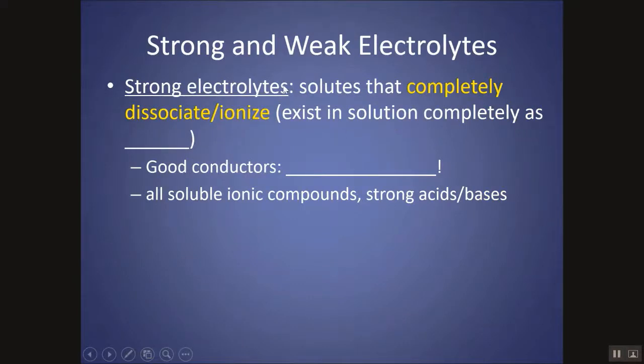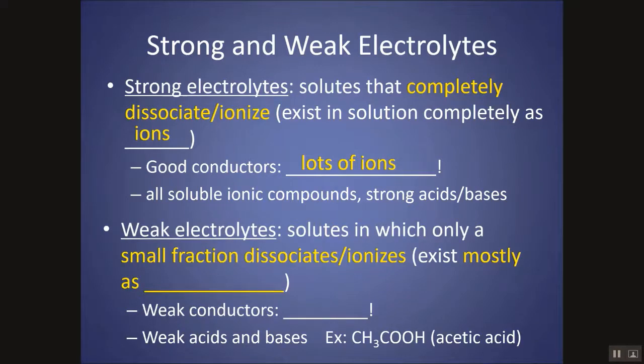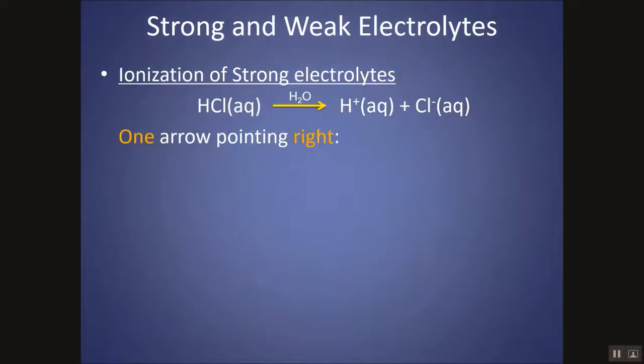Electrolytes can be strong or weak. Strong electrolytes 100% ionized. All of them are present fully as ions, so they are very good conductors. If it does not 100% ionize, then it would be a weak electrolyte. And weak electrolytes usually a lot less than 100% ionizes. A small fraction only ionizes and most of it is present in the molecule form. These are weak conductors because there are fewer ions.